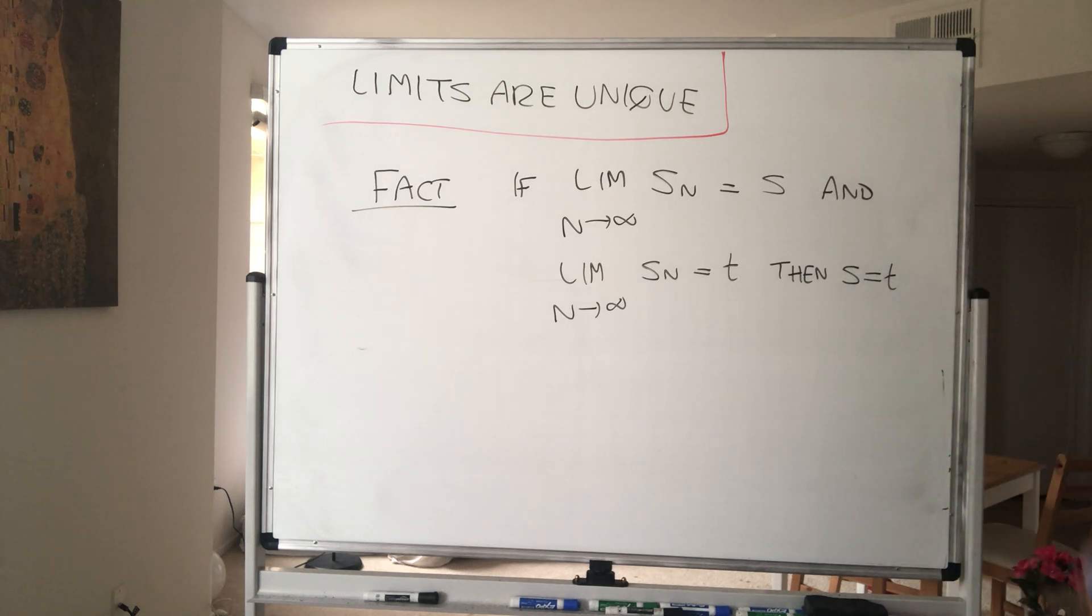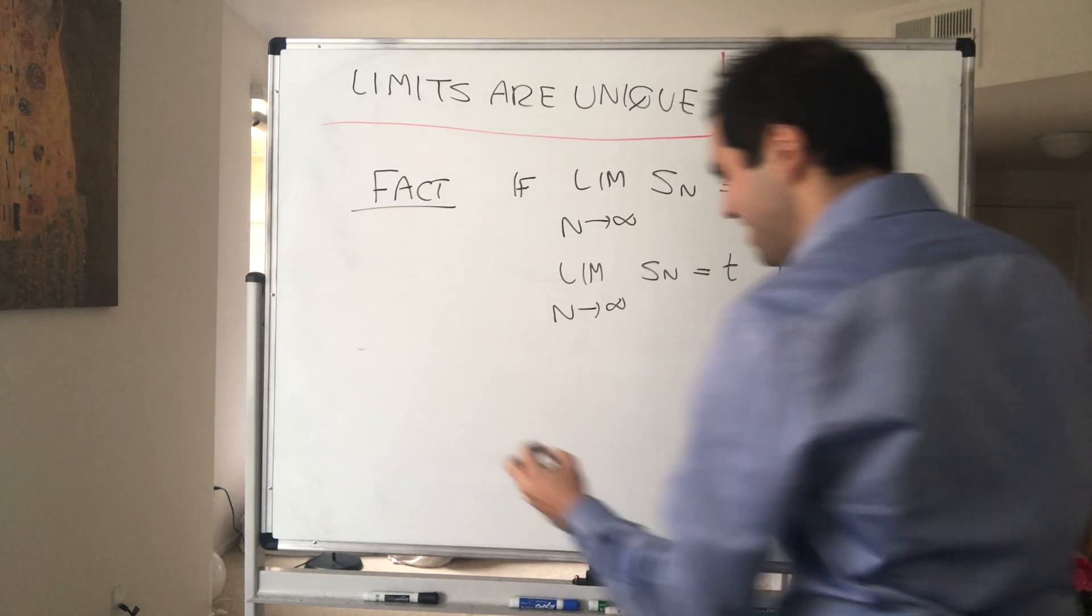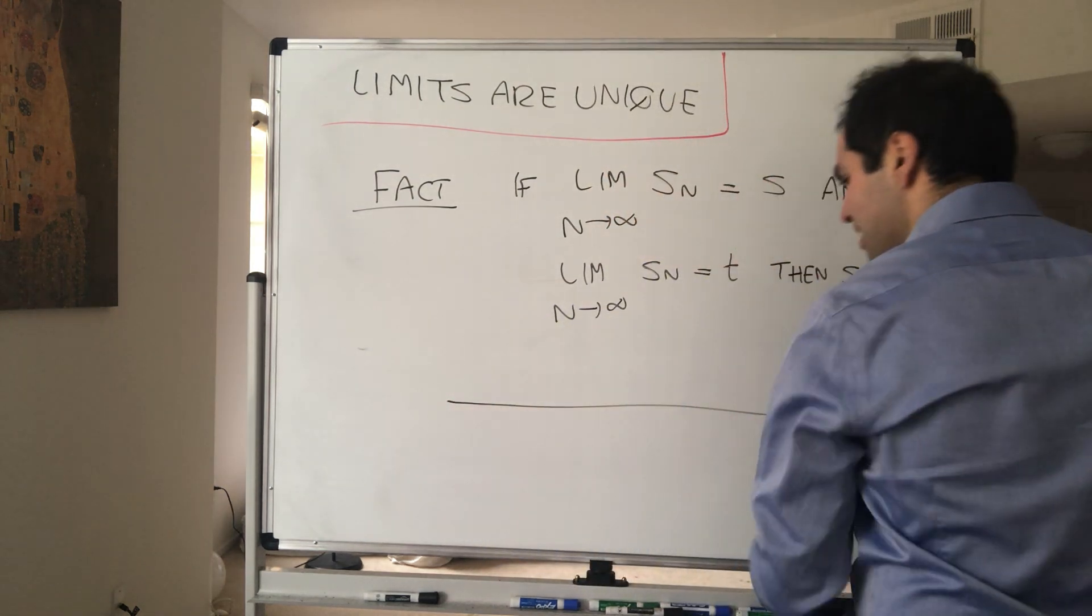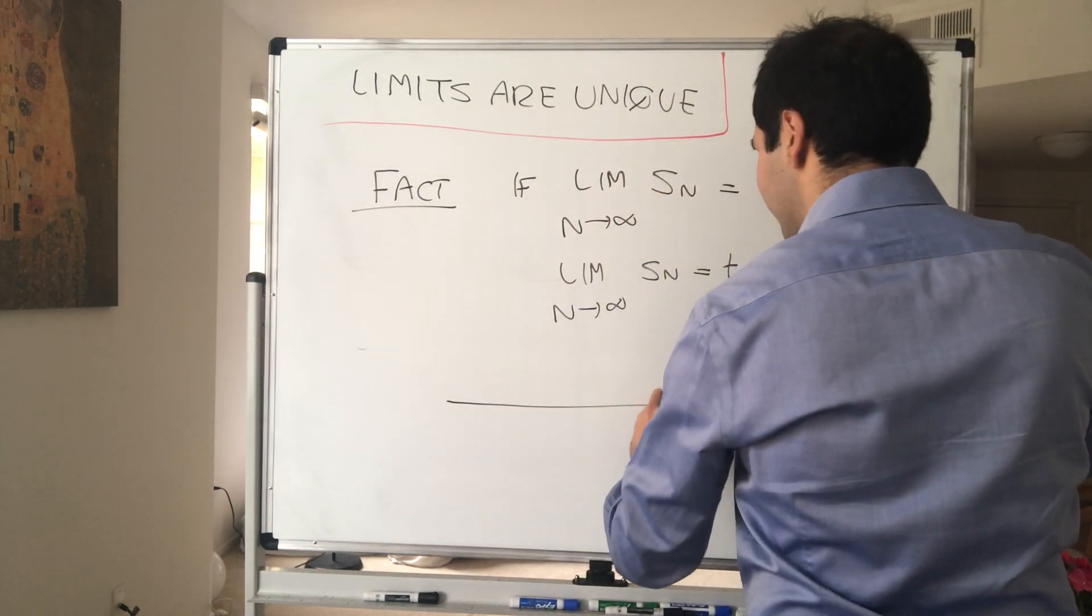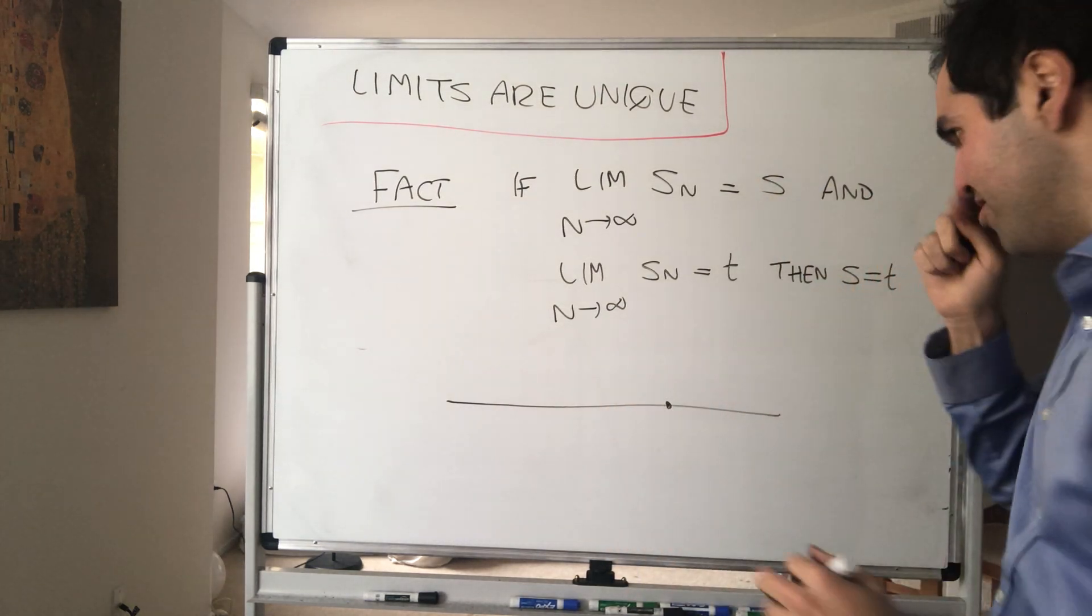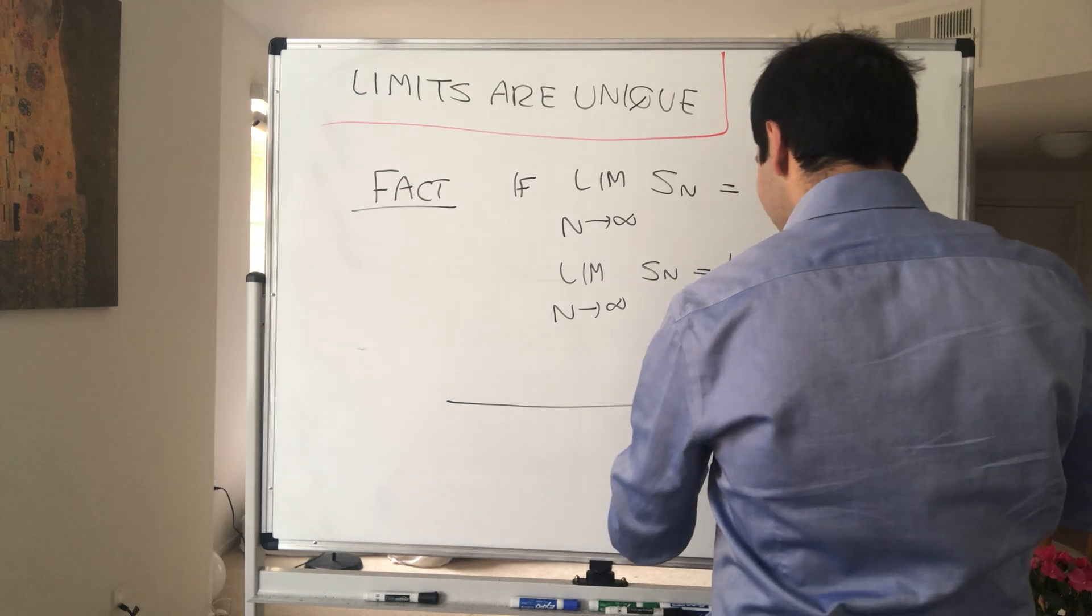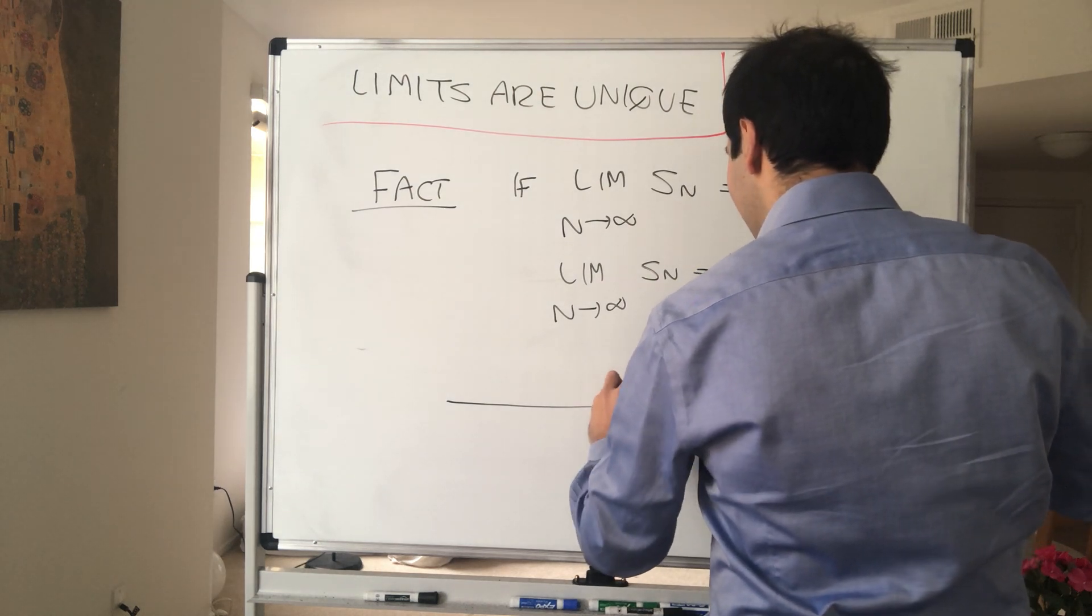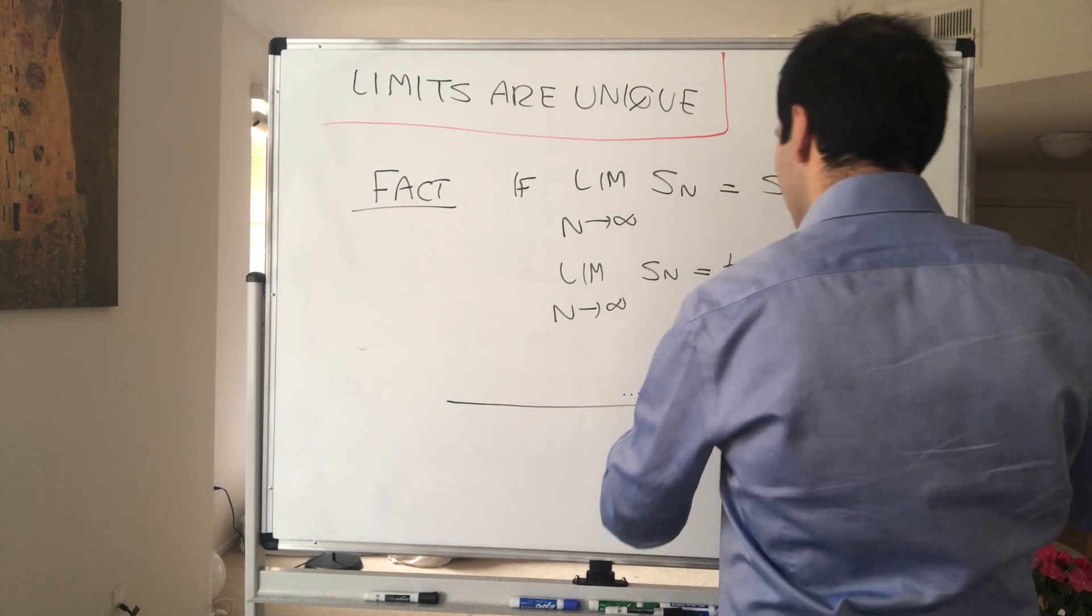And in some sense, it does make sense because you see, if your sequence, suppose this is not true, Sn goes to S, but also Sn goes to T. What this means is that your sequence kind of clusters around the point S, but it also goes very close to the point T.